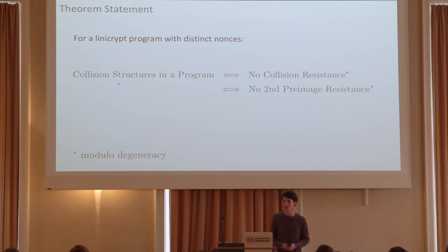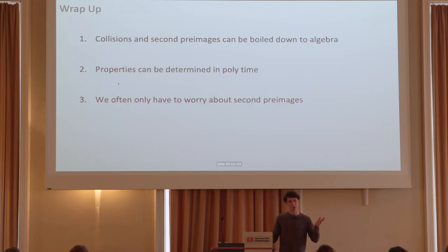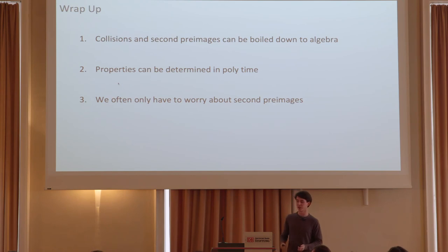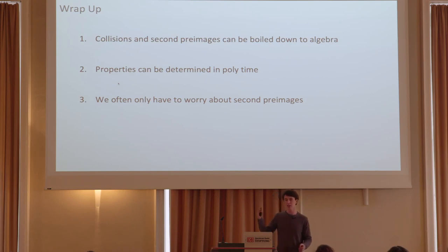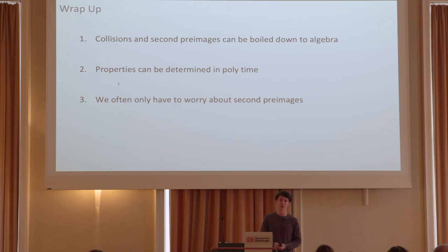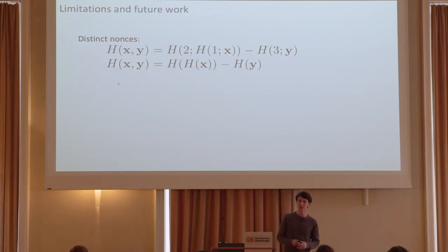The conclusion: collision structures, lack of collision resistance, and lack of second pre-image resistance are equivalent, modulo degeneracy of programs. Collisions and second pre-images in linear programs can be reduced to algebraic terms such as span and linear independence. These properties lend themselves to polynomial time algorithms — in our paper we present a polynomial time algorithm for finding collision structures in arbitrary linear programs. Since collision resistance and second pre-image resistance are equivalent, we can simplify the security parameters for these types of functions.